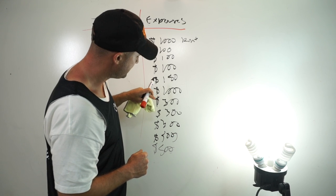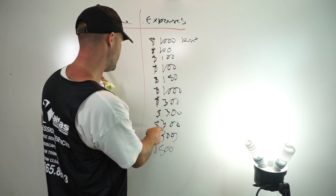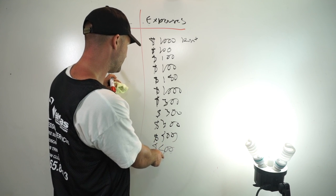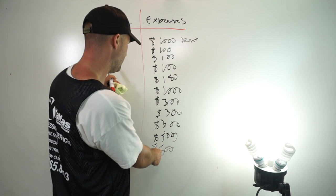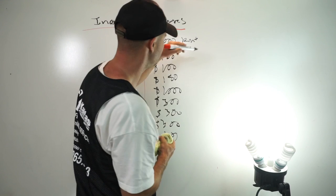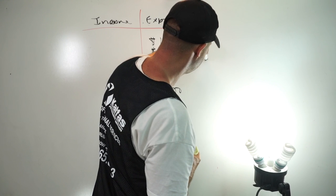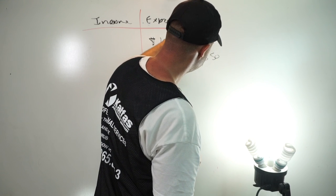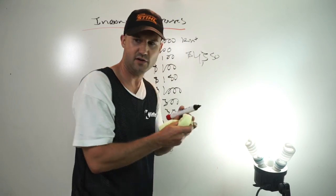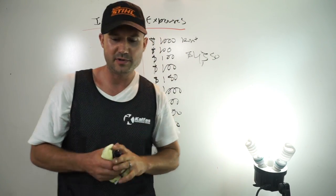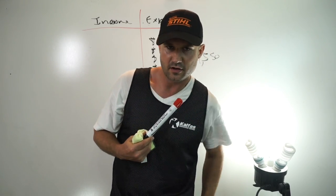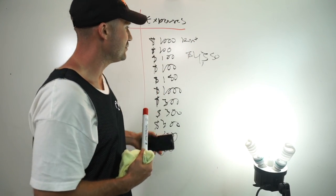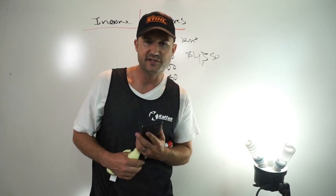Add it all up: a thousand, eleven hundred, twelve, thirteen, fourteen fifty, twenty-four fifty, twenty-seven, three thousand fifty, thirty-three, thirty-eight fifty — about four thousand three hundred and fifty dollars total. Now I'm going to take out my calculator. Obviously if you have a business, your expenses could easily go into ten, fifteen, twenty thousand dollars a month — no problem.